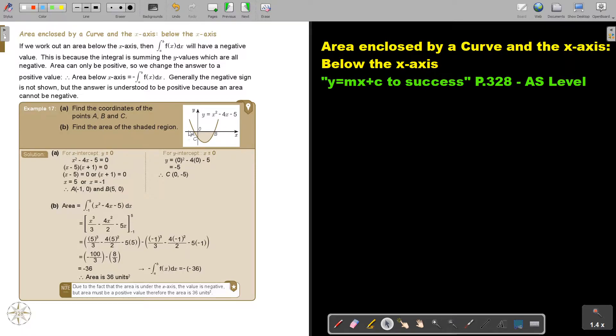So let's look at an example. Find the coordinates of the points A, B and C. This is just coordinate geometry. So there's the curve where it cuts the x-axis. You make the value of Y zero.